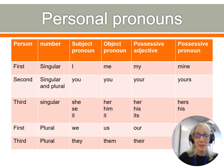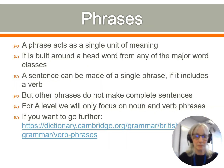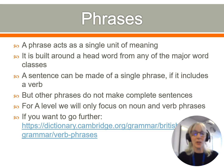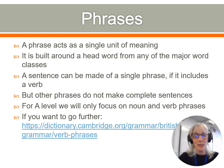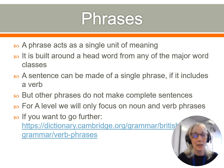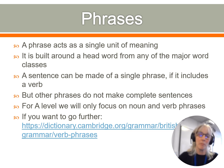So that's the personal pronoun table — it's always helpful and good if you want to be precise about labelling your pronouns. Moving up in size, the next level is the phrase. A phrase acts as a single unit of meaning, built around a head word from any of the major word classes. A sentence can be made of a single phrase if it includes a verb — so 'be on time' is a complete sentence and also a verb phrase. Other phrases do not make complete sentences: 'the big angry giant' is not a sentence, and 'in three weeks' time' is not a sentence but it is a phrase. For A-level, we will only focus on noun and verb phrases.